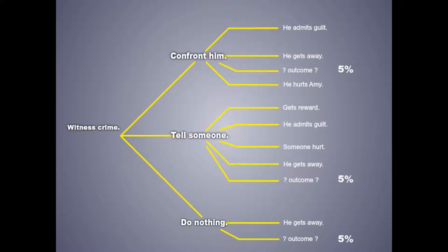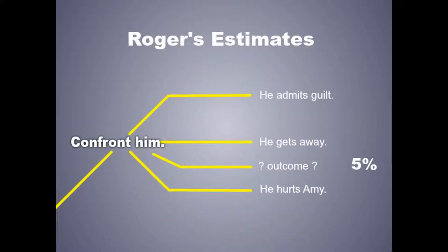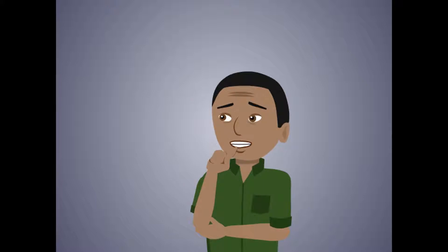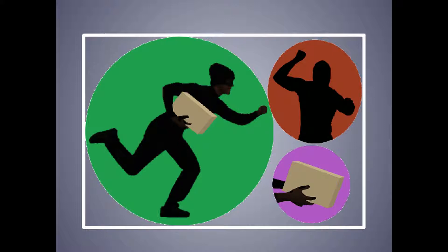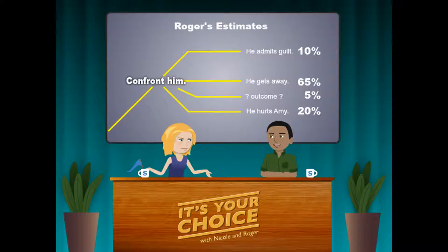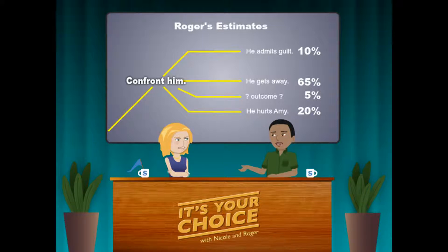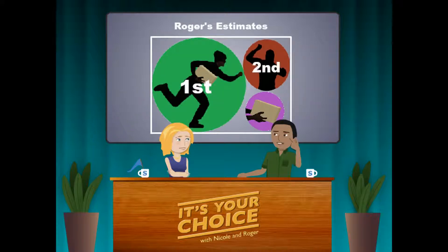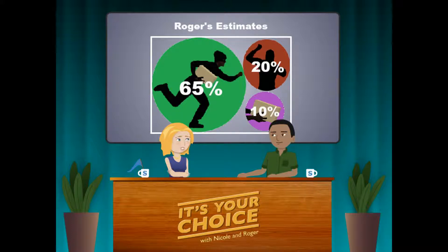What'd you write, Roger? For the first alternative — Amy confronts him — I think there's a 65% chance that he'll run away, a 20% chance that he'll hurt her, and a 10% chance that he confesses and returns the item. I think he's most likely to run away because that's clearly his intention. There's a chance he'll react by turning on her, but I think that's less likely than him running away. He may also return the item, but that seems the most unlikely to me, so I gave it a low value. But where did the numbers come from? How did you calculate 65% exactly? Well, I didn't calculate it exactly — I basically ranked them mentally first, and then gave them numbers based on my own estimates of how likely they seemed relative to each other. That sounds like a pretty useful tool.